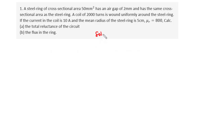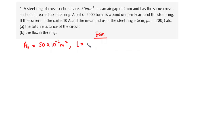Let's pull down the information we derive from this question. The cross-sectional area of the steel ring is 50 mm squared. Converting this to m squared, we multiply 50 by 10 to the power of negative 6, giving 50 × 10⁻⁶ m². For the length of the air gap, we convert from millimeters to meters by multiplying by 10⁻³. The air gap has the same cross-sectional area as the steel ring, so that is also 50 × 10⁻⁶ m².